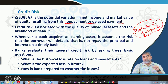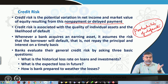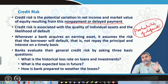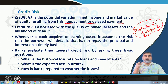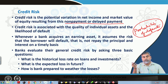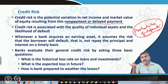Whenever a bank acquires an earning asset, it knows there is risk involved because there is a probability that the borrower may default or may not be able to repay the principal or interest on a timely basis. If interest or principal is not repaid in a particular period, there is some kind of default against that asset. Still, the bank gives the loan because it is the bank's asset and the source of profit generation. Knowingly, banks take this risk but calculate the probability beforehand.